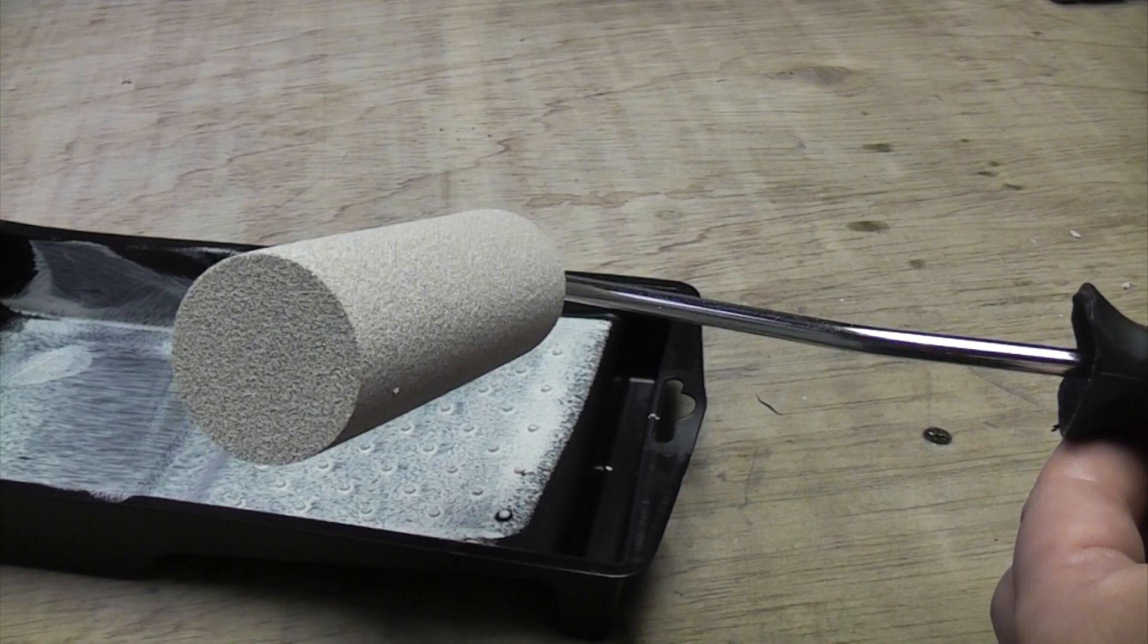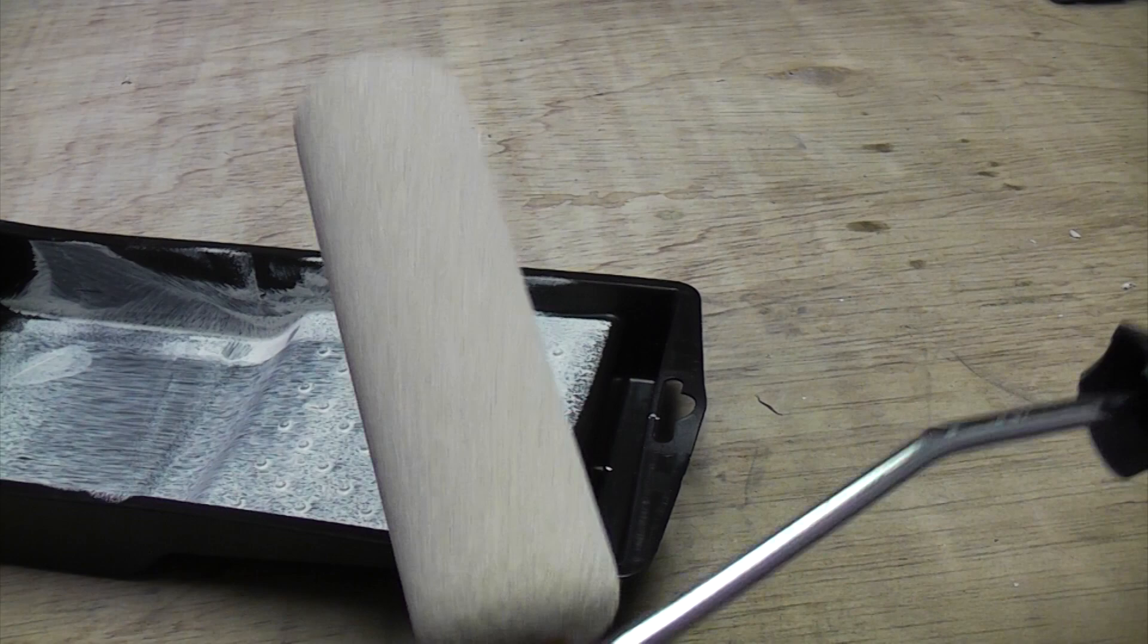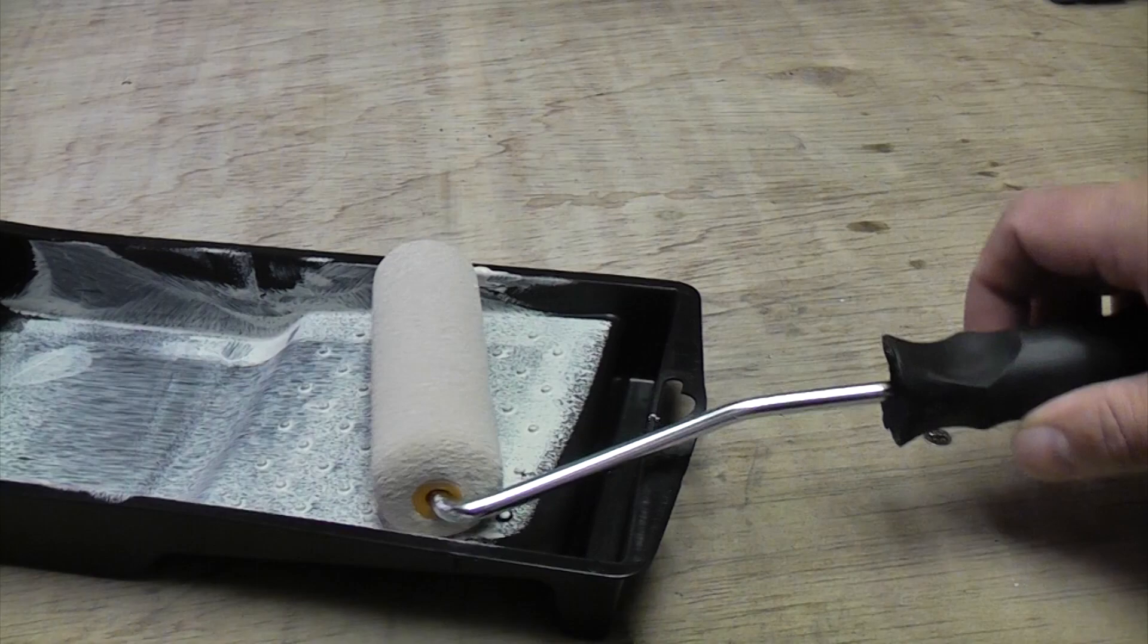If you're going to be using your roller or brush again the day after or in a couple of days, you can just wrap it up in some cling film to stop the air getting at it. That'll keep it nice and soft, and then the next time you come to use it again, you don't need to mess about. All you need to do is unwrap it and use it.